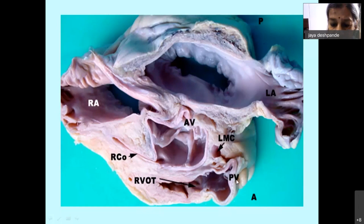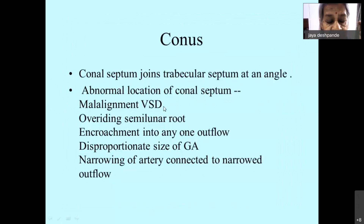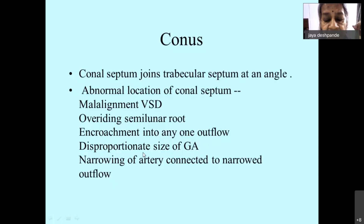The conal septum joins the trabecular septum at an angle. When there is an abnormal location of the conal septum it results in a malalignment type of VSD. It also causes overriding of the semilunar root, and the abnormal location of the conal septum encroaches into one of the outflows, resulting in disproportionate size of the great arteries — the artery connected to the narrowed outflow becomes very small.